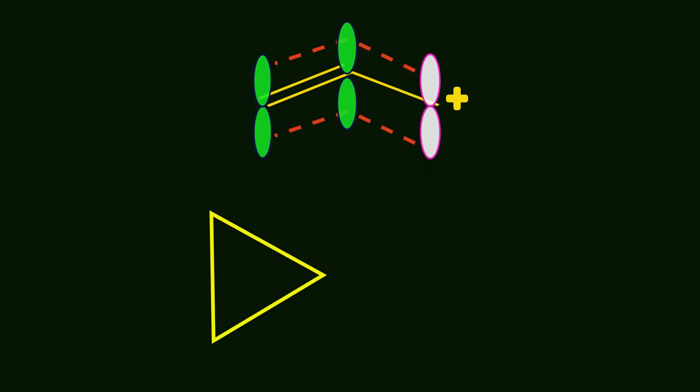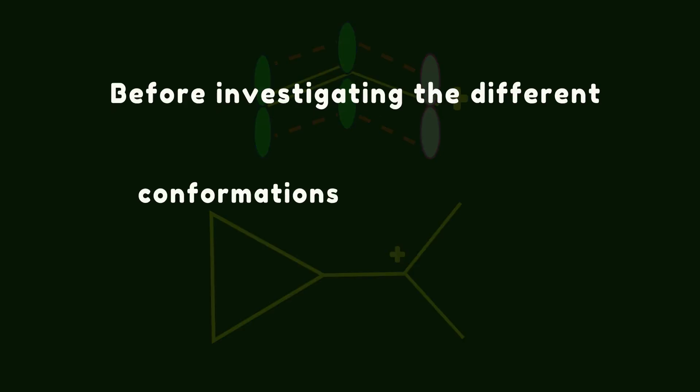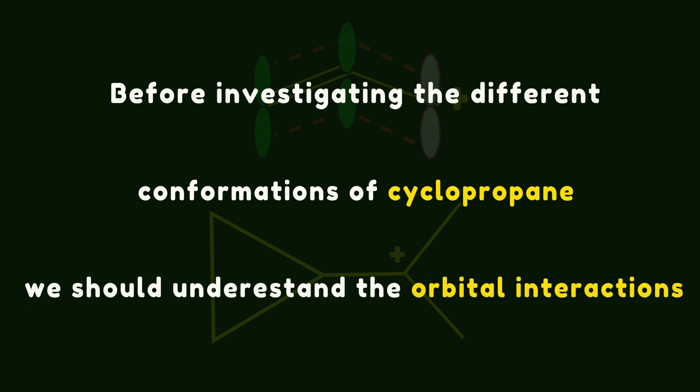Now, let's install a carbocation group on the cyclopropane skeleton and investigate the stability of the cyclopropyl methylcarbocation. Although cyclopropane can exhibit conjugation effect, it strongly depends on the conformation of the molecule. Before investigating the different conformations of cyclopropane, we should understand the orbital interactions.